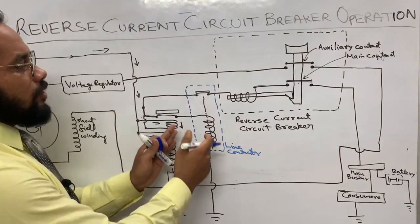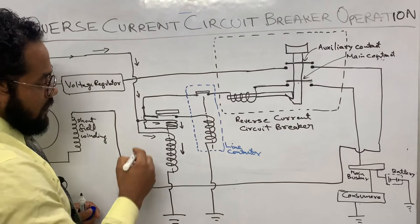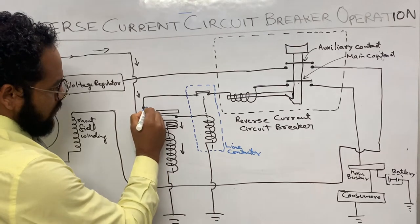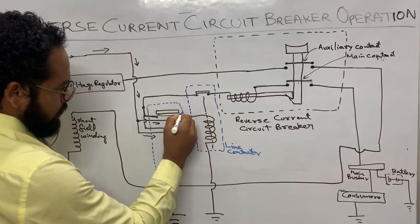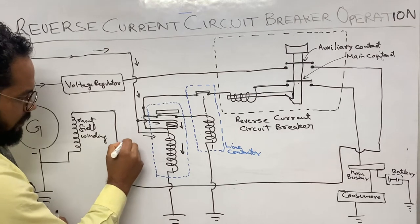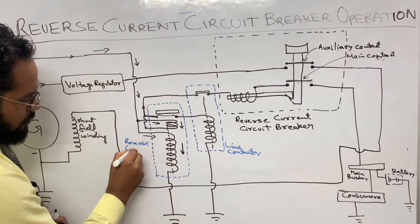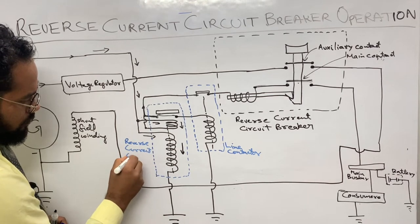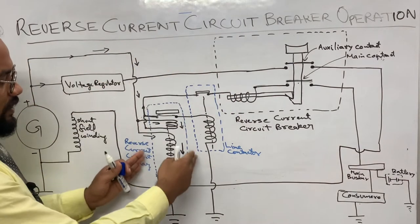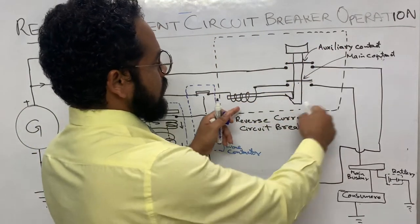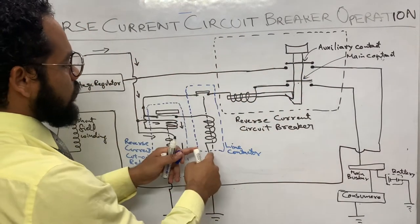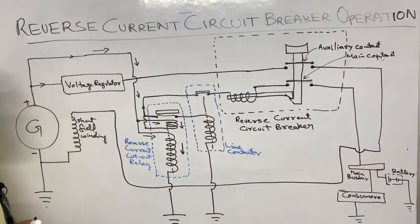This is your reverse current cutout relay, enclosed within this dotted blue line. In this schematic diagram you have a reverse current cutout relay and a reverse current circuit breaker. Since both are connected in the circuit, we use a line contactor to connect both of them.